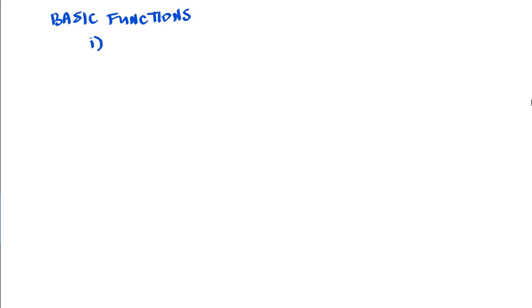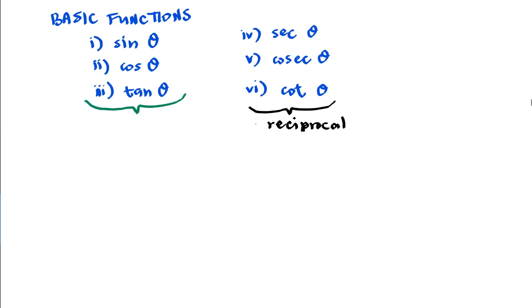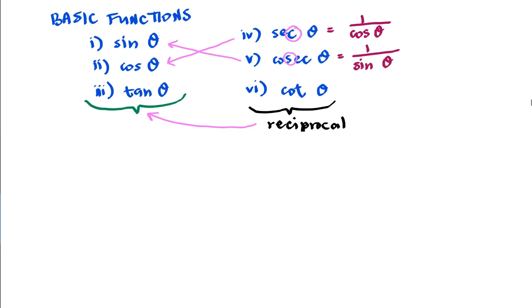Let's recap what we've learned. We have three basic trigonometric functions: sine, cosine, and tangent. The other three functions — secant, cosecant, and cotangent — come from the reciprocals of these three. To know which, look at the third letter: secant is 1 over cosine, cosecant is 1 over sine, and cotangent is 1 over tangent.